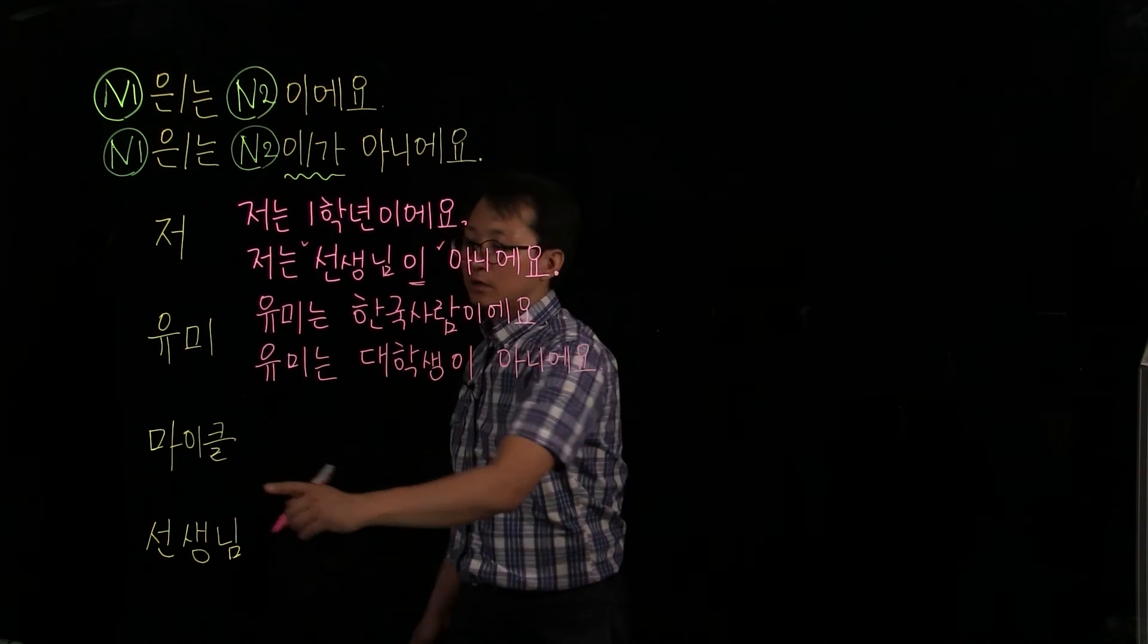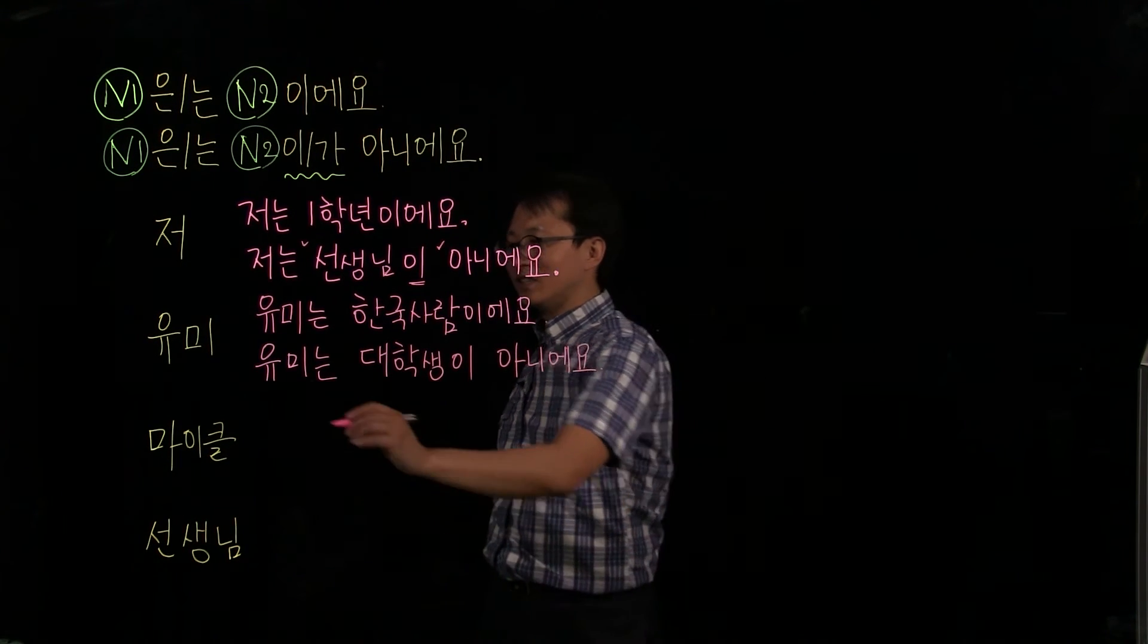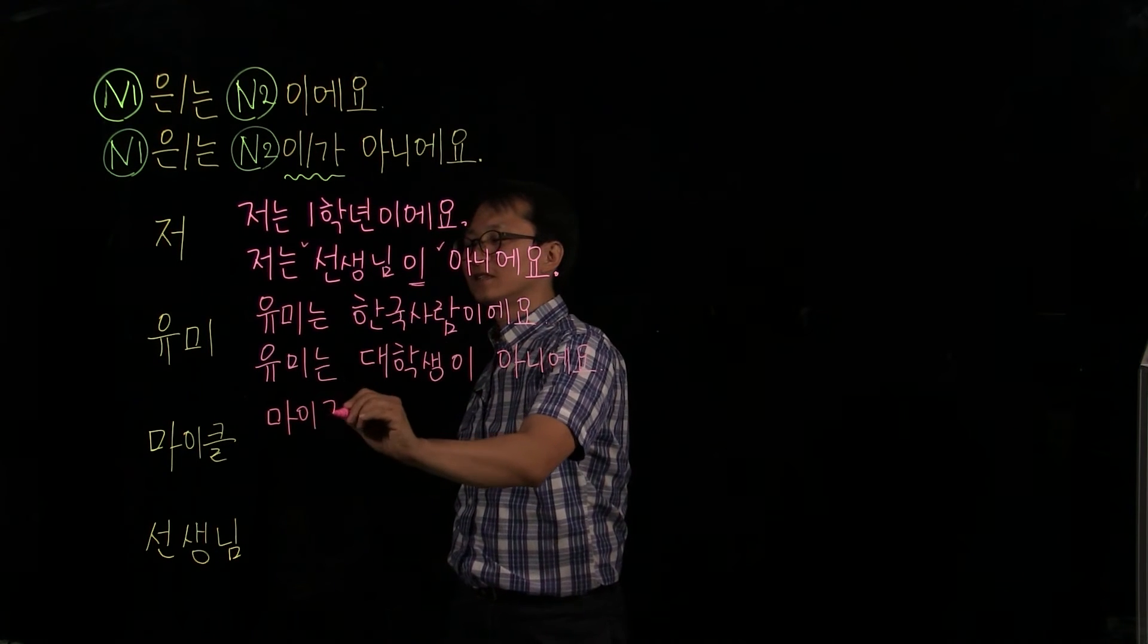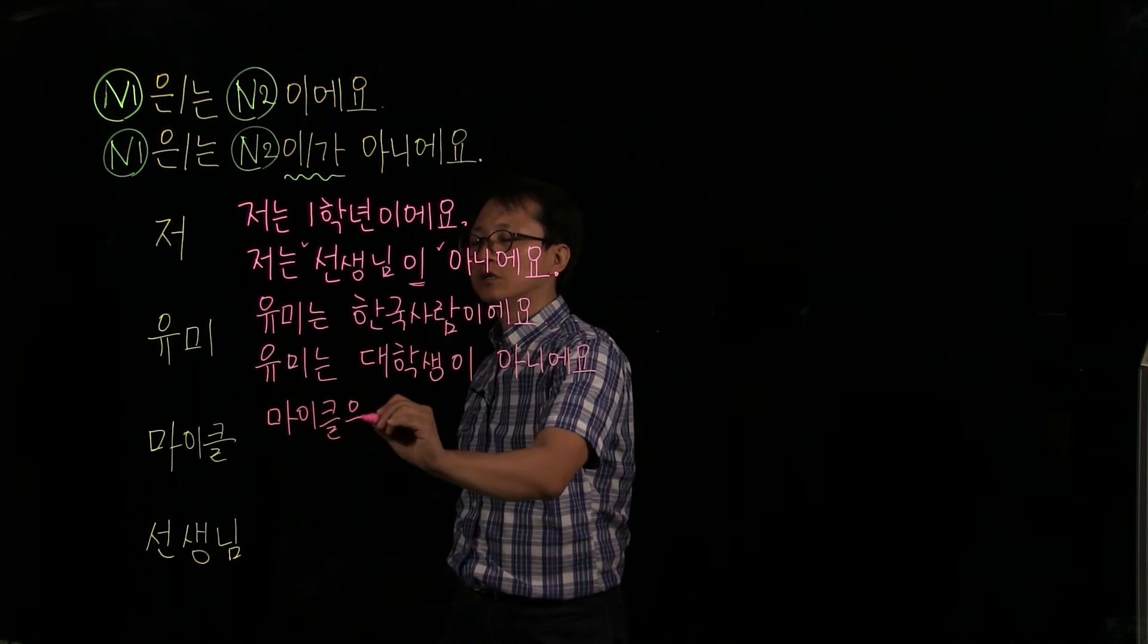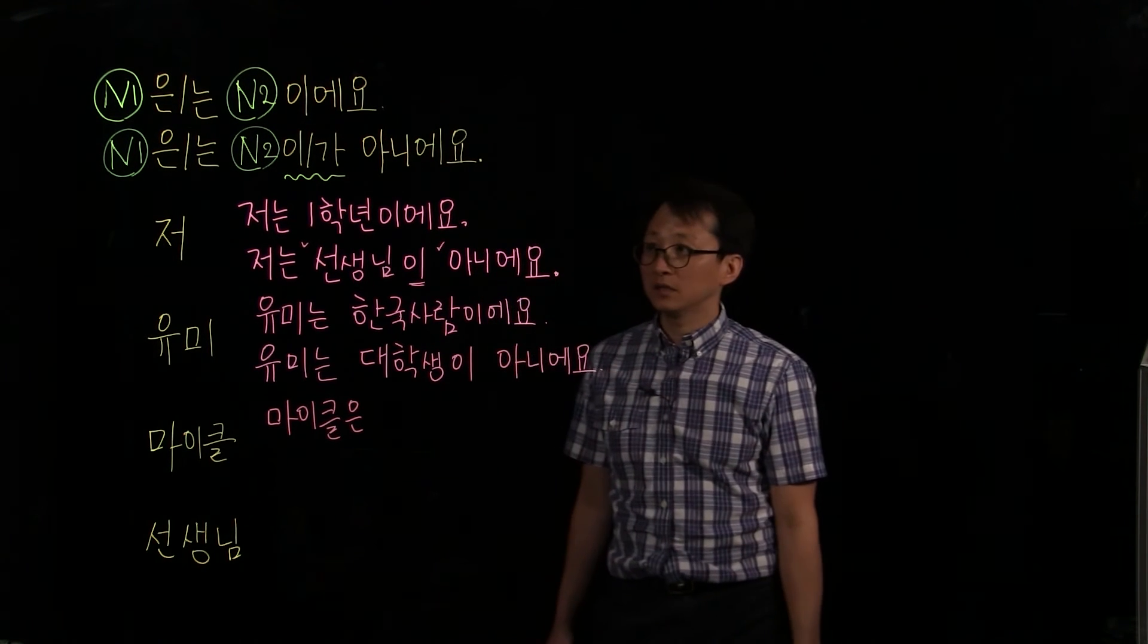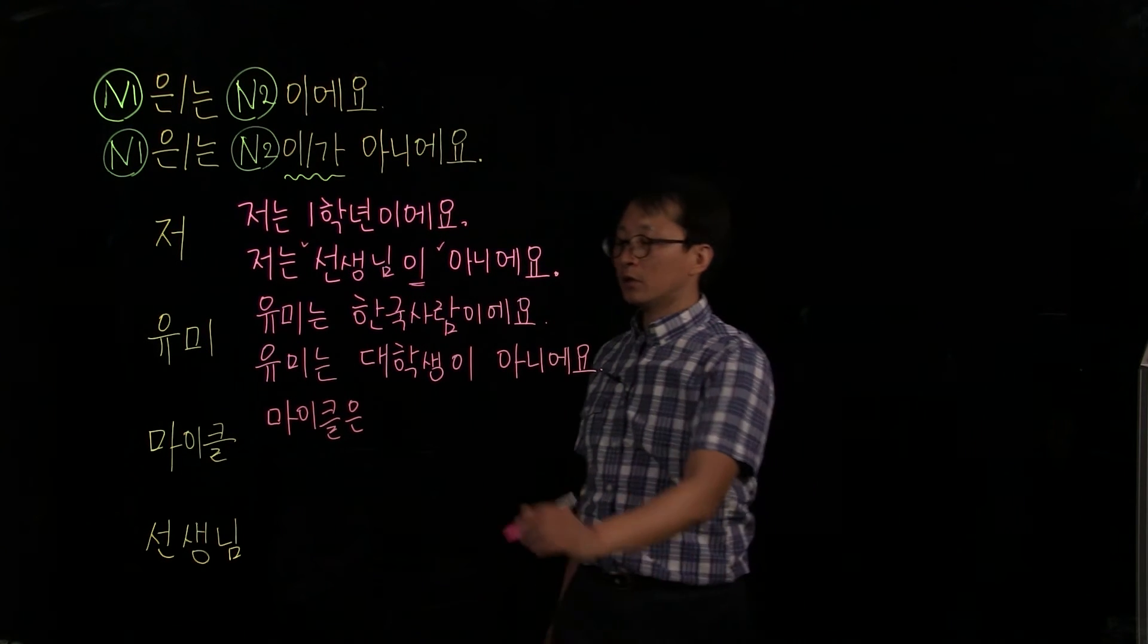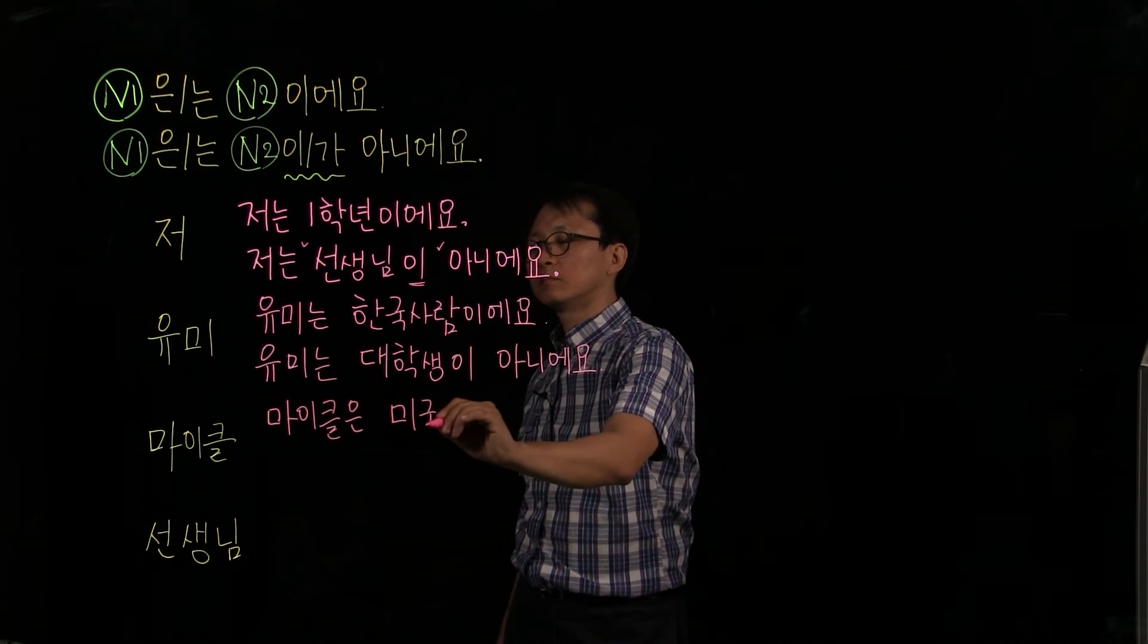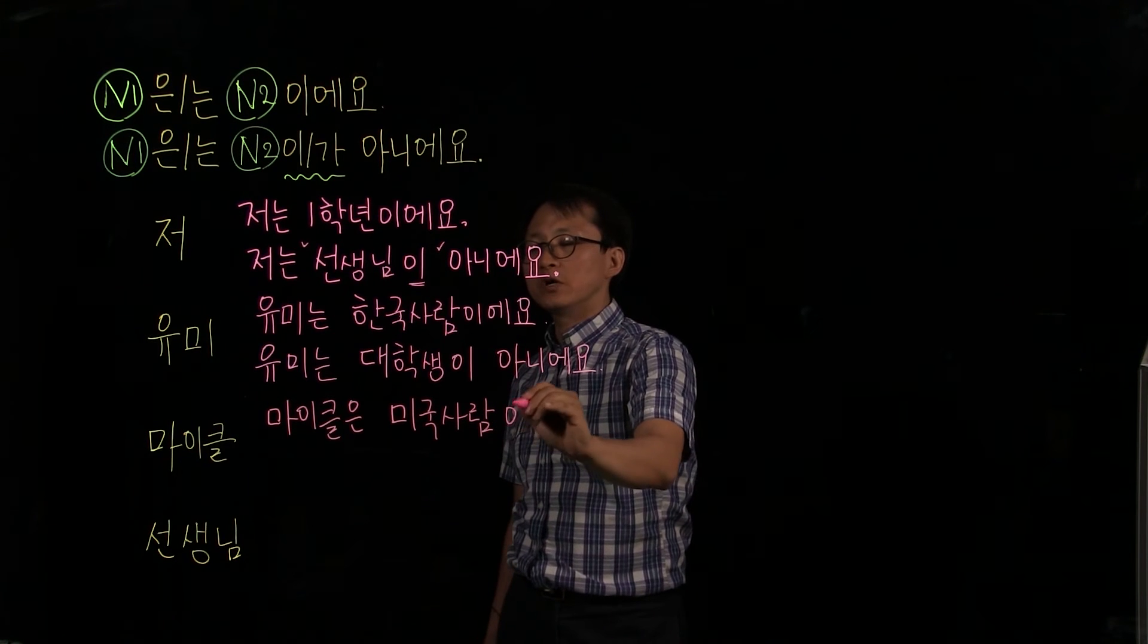마이클, 마이클, 그렇죠? And let's talk about what Michael is. 마이클은. And what particle do we need? There is a consonant, we need 은. 마이클은 is an American, so 미국 사람. 미국 사람이에요.